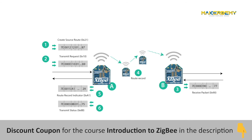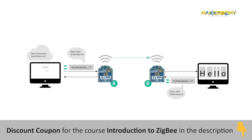From this, it might be clear that transparent mode is used generally only when you just need data to be passed wirelessly, for range extension, and for creating a bigger network. Thus, most of the time, transparent mode devices are mixed along with API mode devices in a ZigBee network. Now let's look at the API mode.